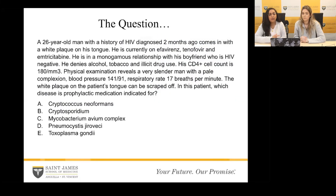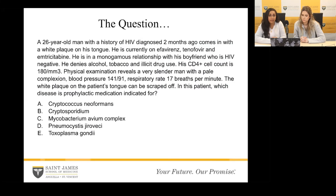The question we posted was: a 26-year-old man with a history of HIV diagnosed two months ago comes in with a white plaque on his tongue. He is currently on efavirenz, tenofovir, and emtricitabine. He is in a monogamous relationship with his boyfriend who is HIV negative. He denies alcohol, tobacco, and illicit drug use.